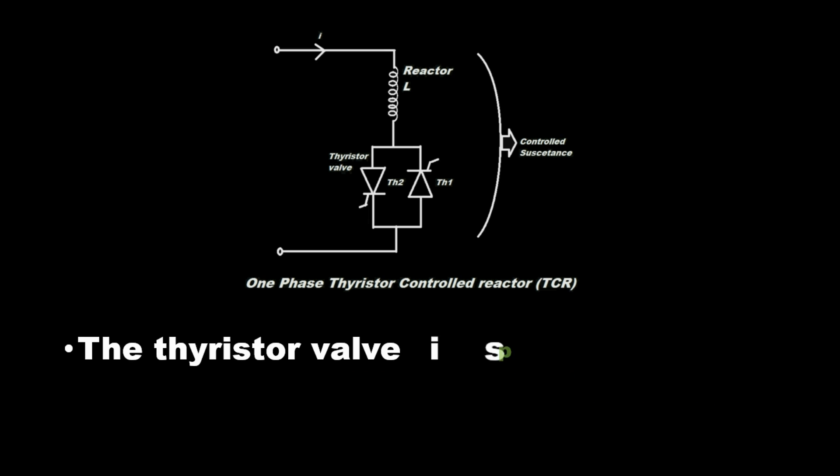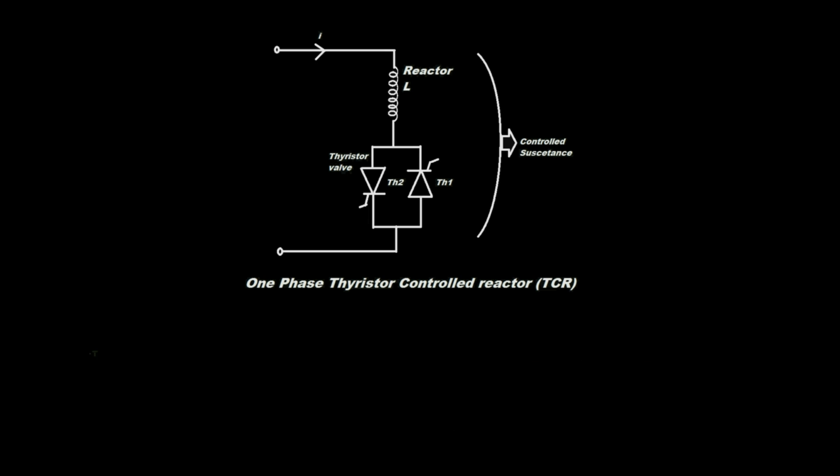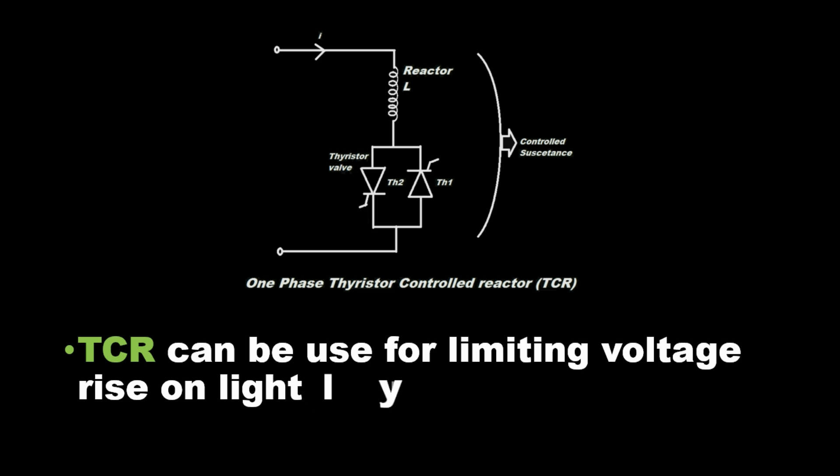The thyristor valve is phase controlled which gives reactive power according to system requirements. TCR can be used for limiting voltage rise on lightly loaded transmission lines.